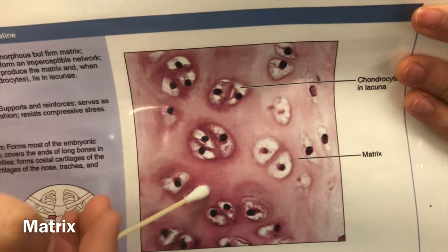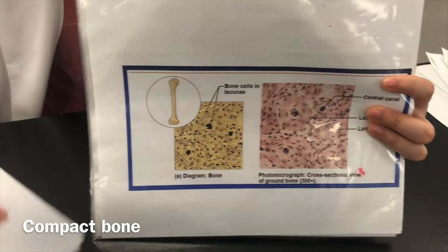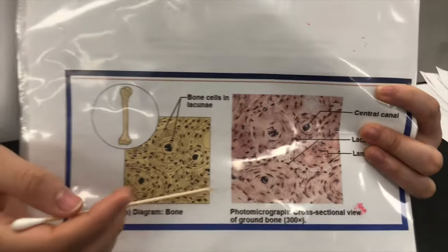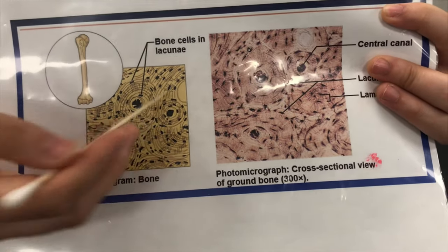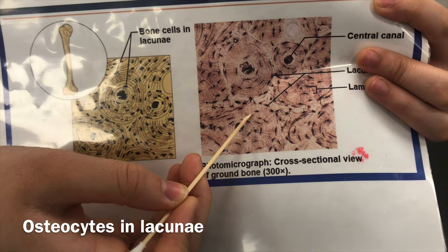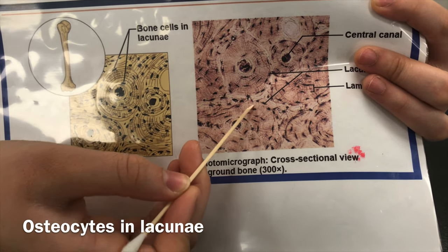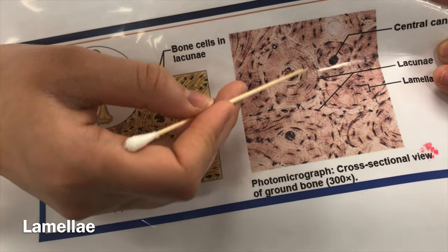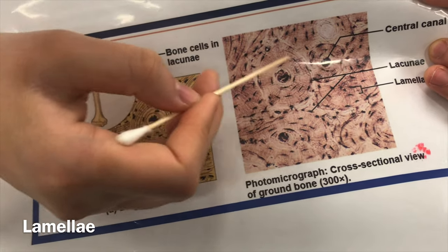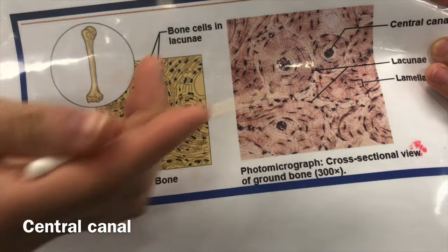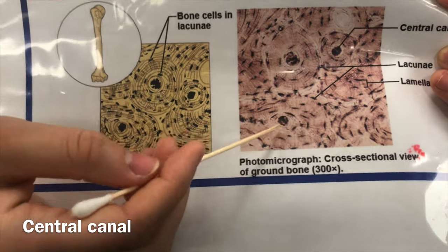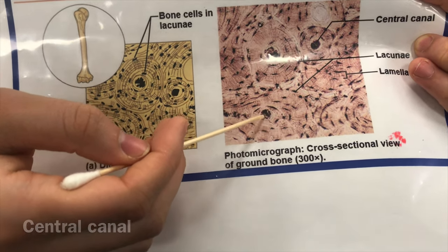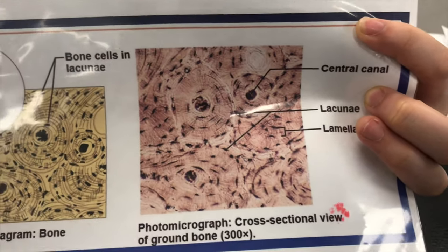This tissue is compact bone. Similar to hyaline cartilage, bone also has lacunae — little pockets within the bone tissue that hold the osteocytes, your bone cells. Looking at the structure, you see little concentric circles called lamellae, each individual ring. In the center is the central canal, which is how bone gets its blood supply — blood vessels run through these central canals to deliver nutrients to the osteocytes.